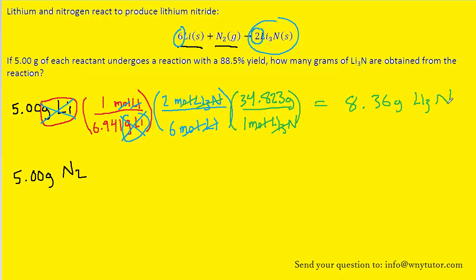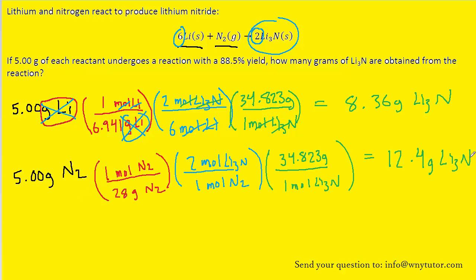We obtain the result. Now we're going to set up a similar series of unit conversions for the nitrogen to determine how much product would be formed based on 5 grams of nitrogen. Let's set that up in a similar way, a little more speedily this time.